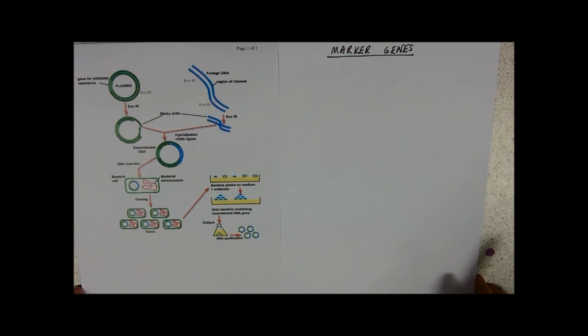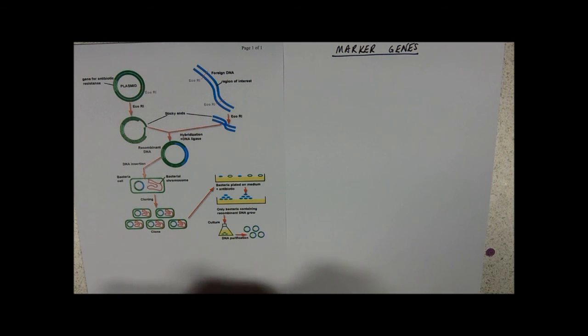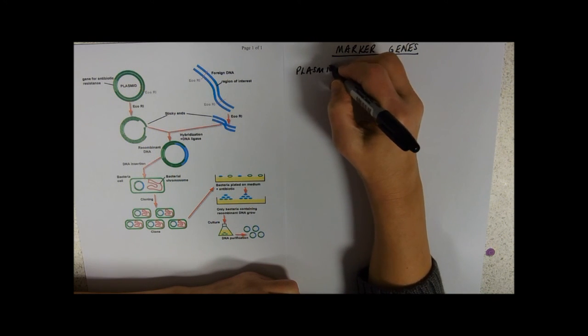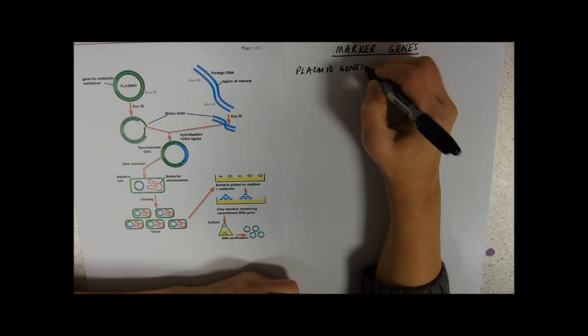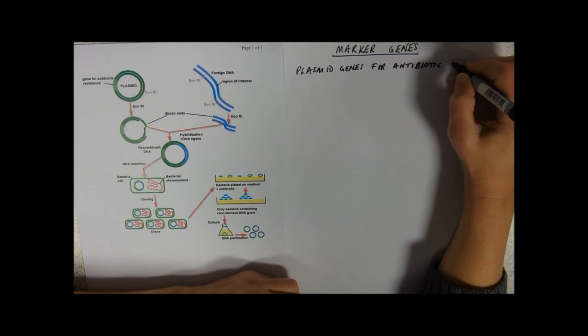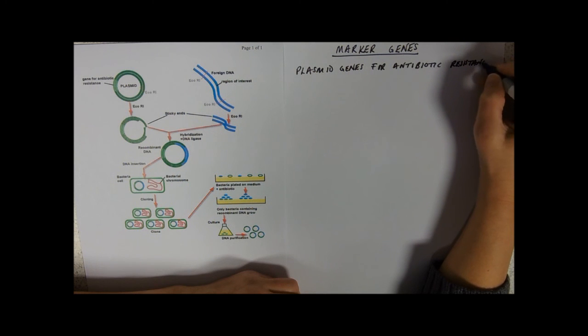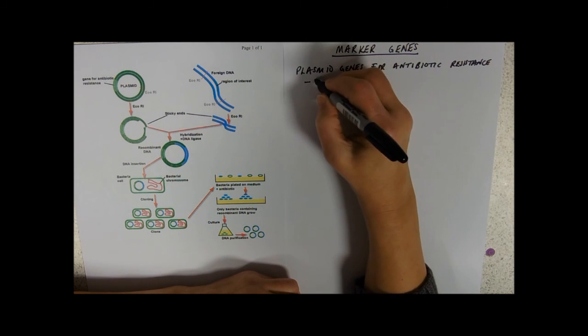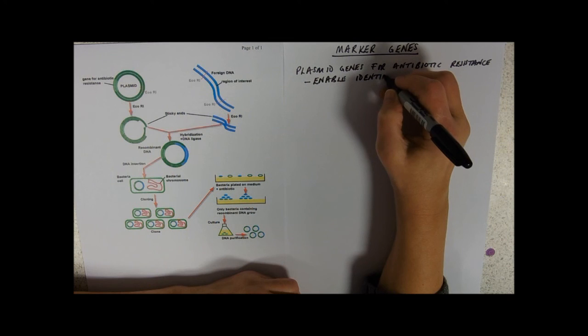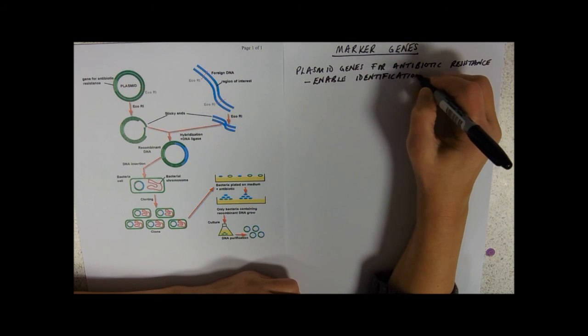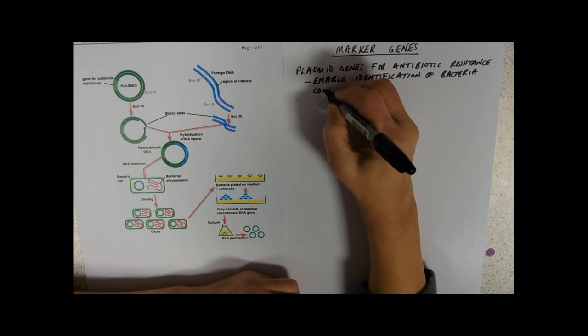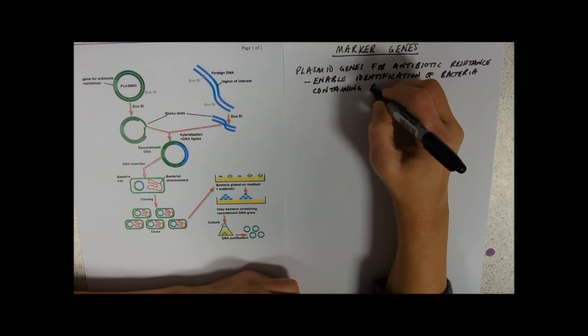So here we go, let's talk about marker genes. Marker genes are genes in the plasmid, so these are plasmid genes for antibiotic resistance. What do we use them for? They enable identification of bacteria containing these recombinant plasmids.